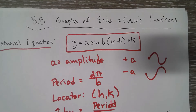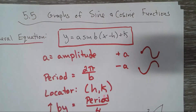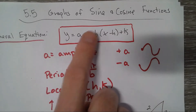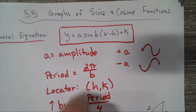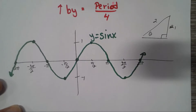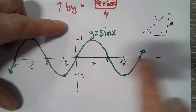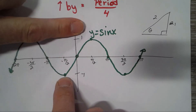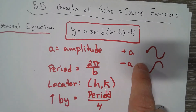Section 5.5 is graphs of sine and cosine functions. We're graphing y equals sine x and y equals cosine x. Looking at y equals sine x, there's a general equation with several parameters. The 'a' out front represents the amplitude — how far the graph goes from the midline up. For y equals sine x, the amplitude is one. Note that the full distance from bottom to top is two, but amplitude is only half of that, measured from the midline.